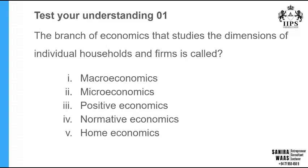Let's tackle this question with the knowledge we have. Reading the question: 'The branch of economics that studies the dimensions of individual households and firms is called...' The question highlights individual households and firms, which makes it clear cut that this is focusing on microeconomics concepts, as it focuses on the dimensions of individual households and firms.